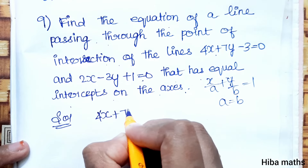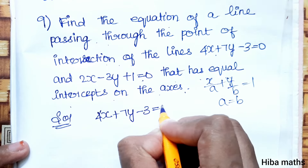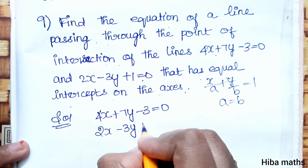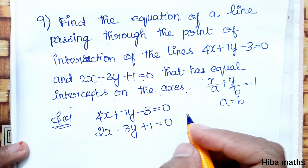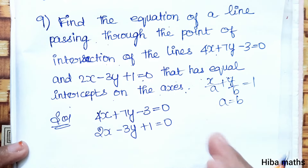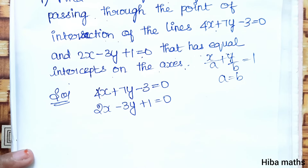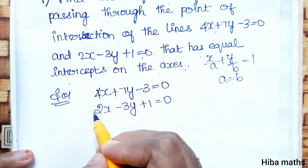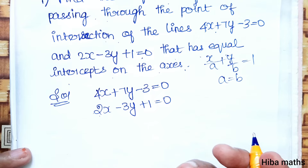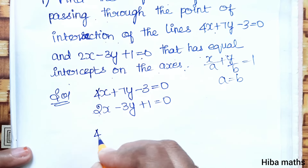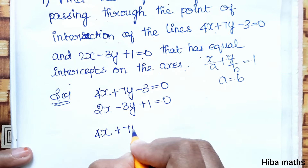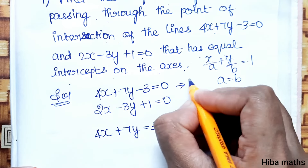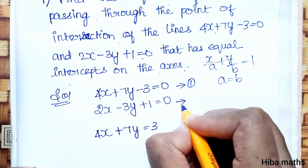So we have 4x + 7y - 3 = 0 (equation 1) and 2x - 3y + 1 = 0 (equation 2). We will use the elimination method. Since the x-coefficients are 4 and 2, we multiply equation 2 by 2 to get 4x - 6y + 2 = 0.